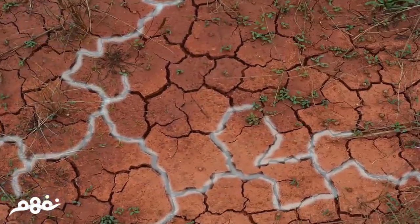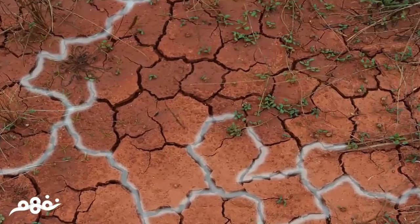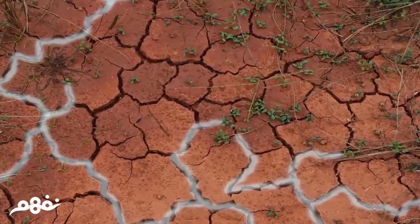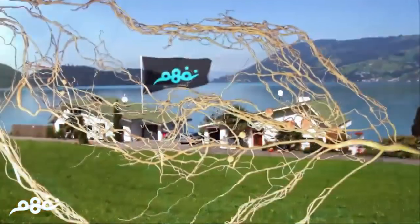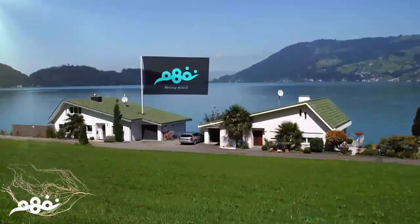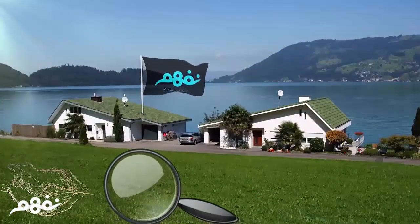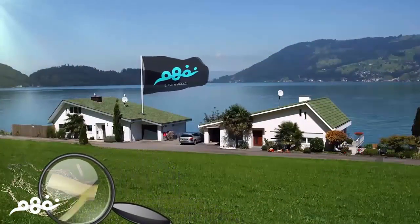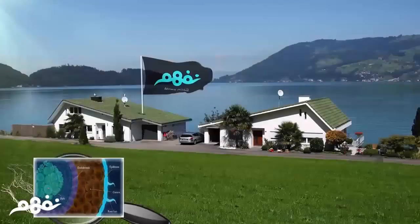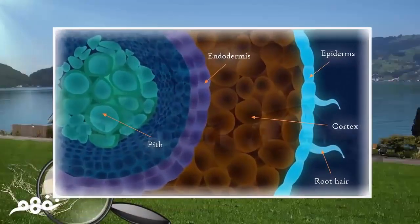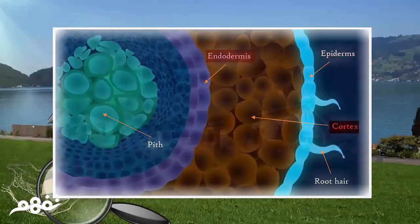Now we need to understand how the root system of the plant absorbs water and salts from the soil and delivers them to other parts of the plant. Root hairs are the parts responsible for this process. If we make a cross-section of a plant root, we can see root hairs which extend from the epidermis. The figure also shows the cortex, endodermis, xylem, and phloem vessels.